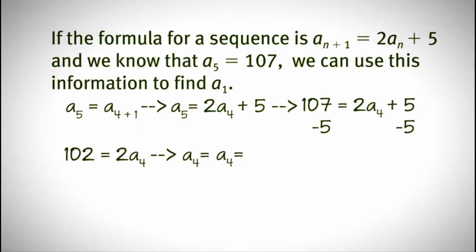So a sub 4 is equal to 2 times a sub 3 plus 5. Well a sub 4 is 51, so 51 is equal to 2 times a sub 3 plus 5. Now when we solve for a sub 3, we subtract 5 from both sides. We get that 46 is equal to 2 times a sub 3. So a sub 3 is equal to 23.